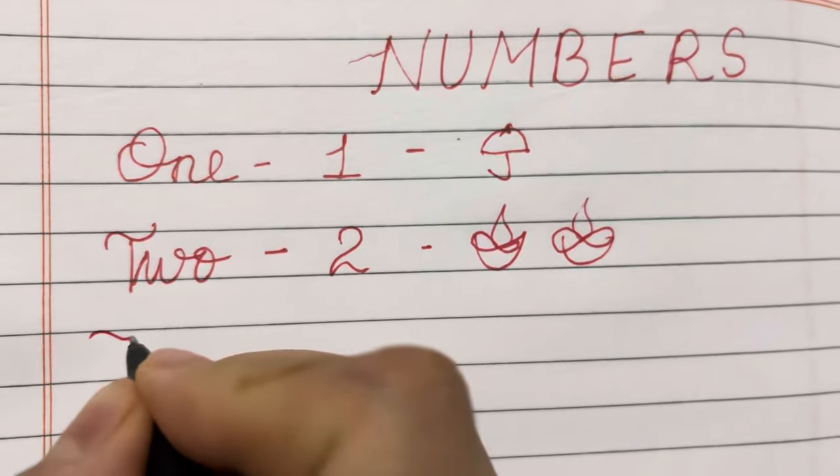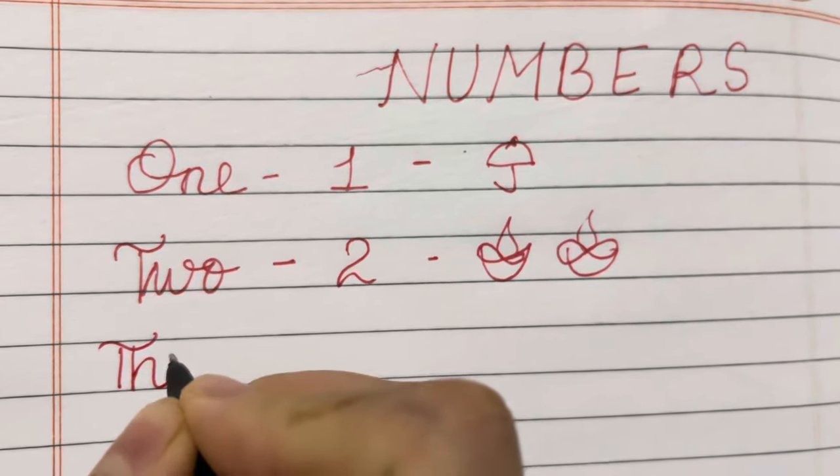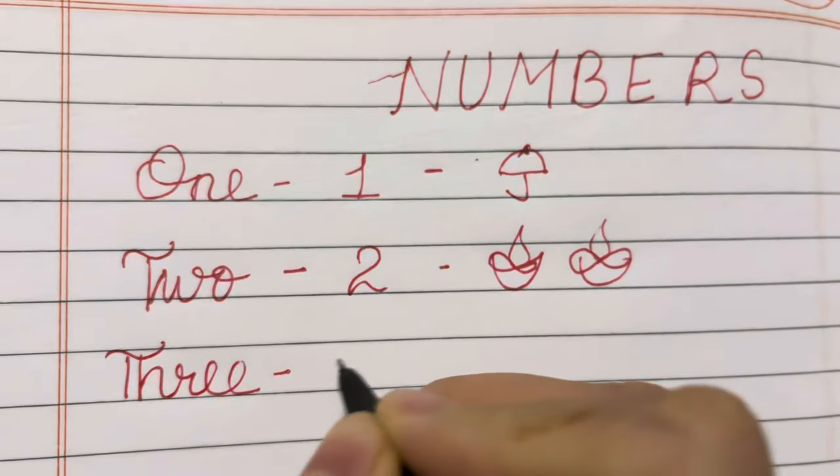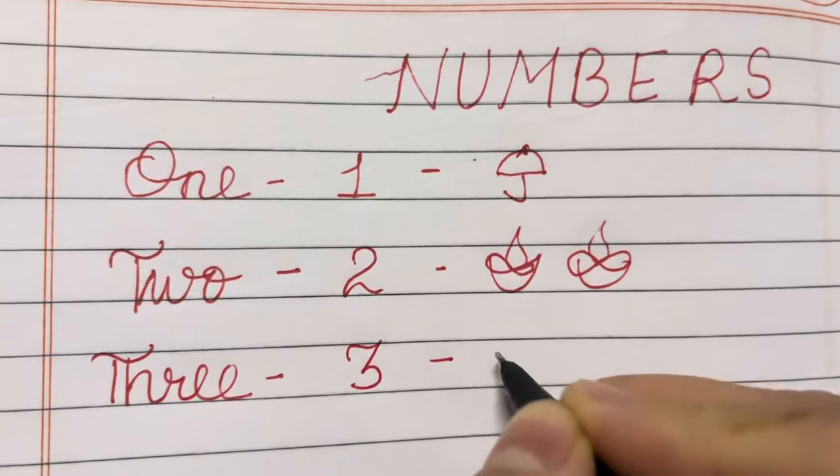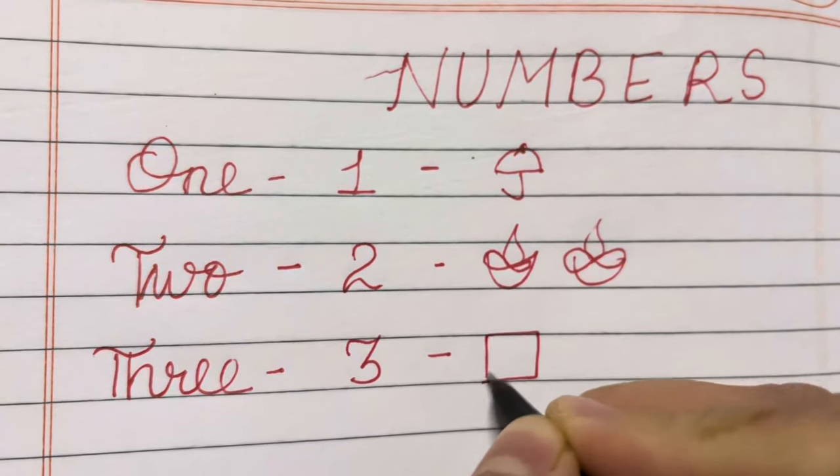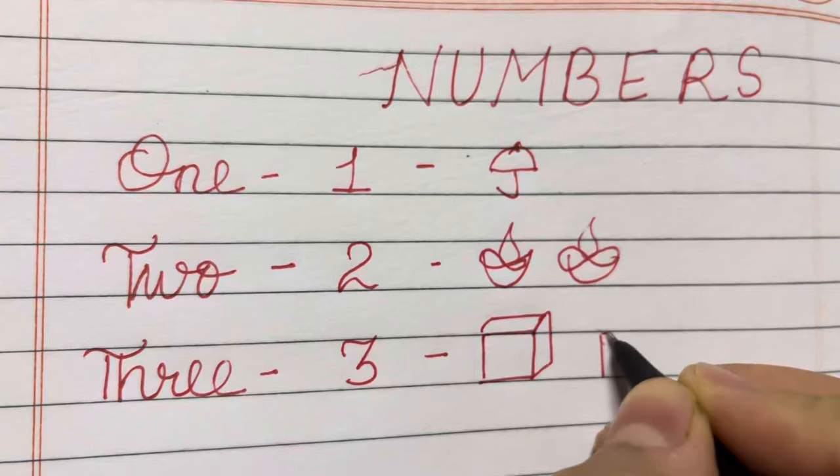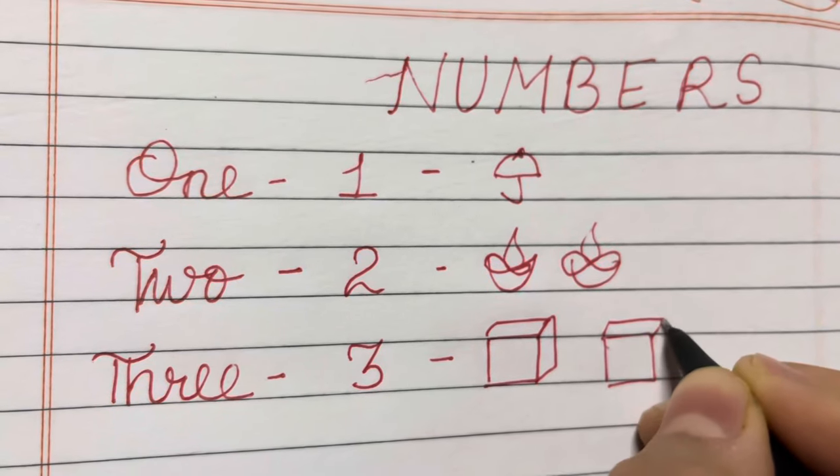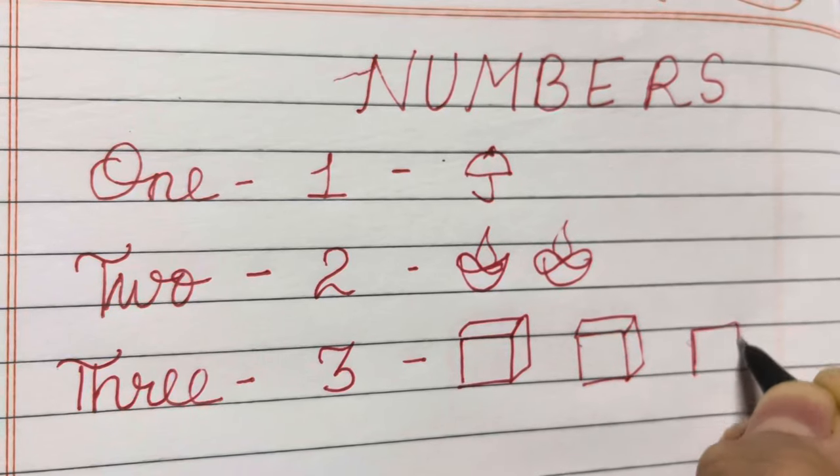Three. T-H-R, double E, three. Three boxes. One, two, three.